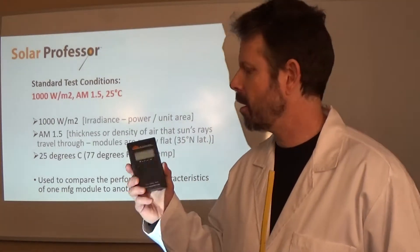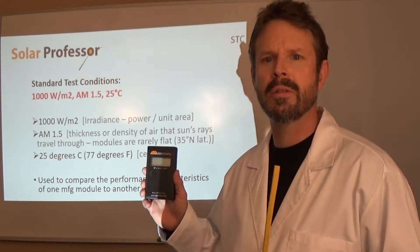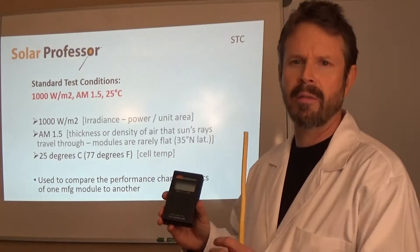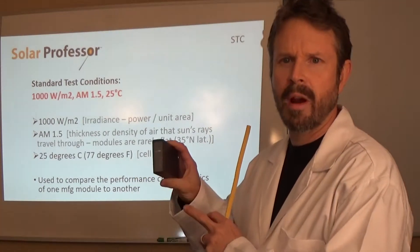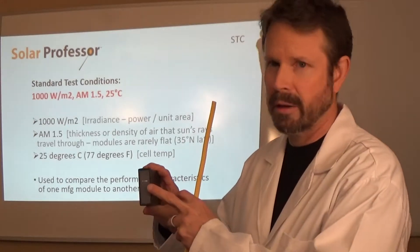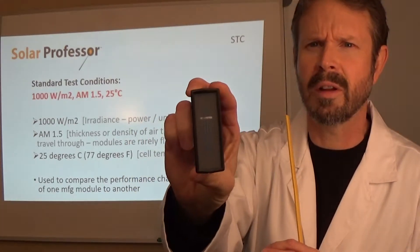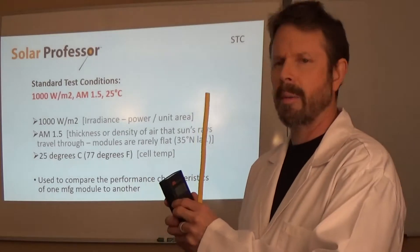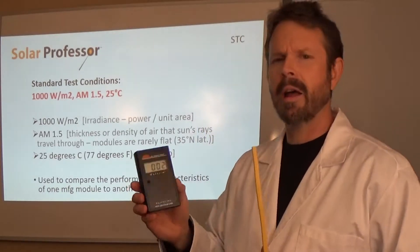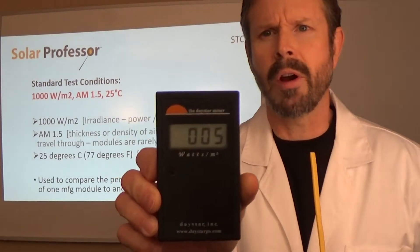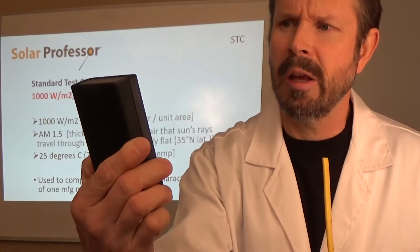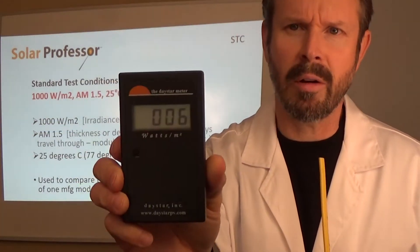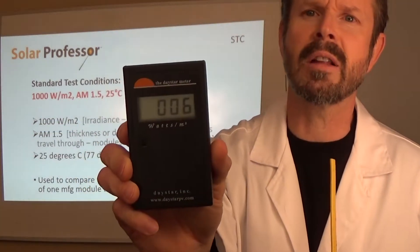This particular one is manufactured by Daystar. It's very commonly used in the industry. And it takes a 9-volt battery. It actually has a reference solar cell right on the front of it if you can see that on the top of it right there. And you simply turn it on and then it's going to give you a reading of the light. Now, here in my studio, the studio lighting is not super bright.